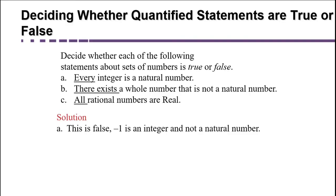Part B: There exists a whole number that is not a natural number. 'There exists' is an existential quantifier — so if there's even one whole number that's not a natural number, the statement is true. And it is true: zero is the only one. The whole numbers are basically the natural numbers with zero added, so there is one whole number that's not natural.